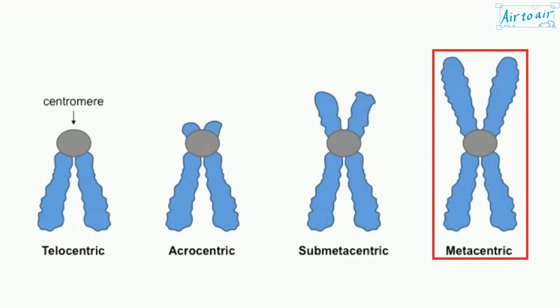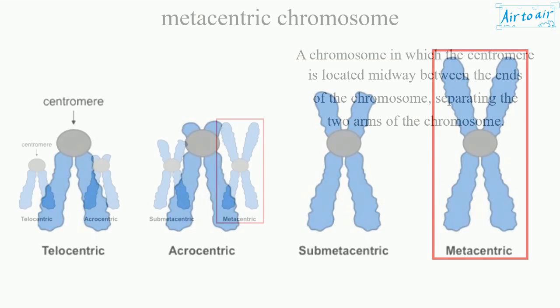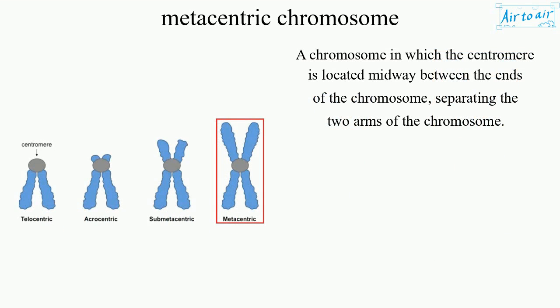Metacentric chromosome. A chromosome in which the centromere is located midway between the ends of the chromosome, separating the two arms of the chromosome.